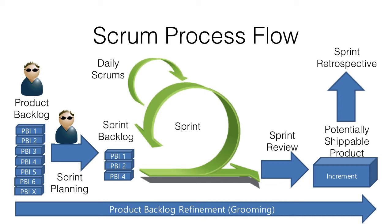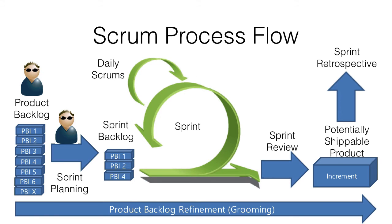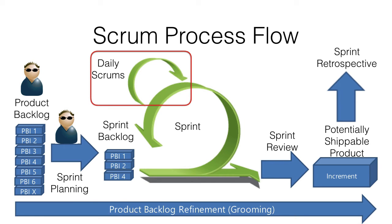The development team immediately set to work completing the items in the sprint backlog in a set timeframe called a sprint. Every day during the sprint, the development team meet in a short 15-minute stand-up meeting called the daily Scrum, to discuss their individual progress, synchronize their activities, identify any issues that will stop them from working, and plan for the work to be completed in the next 24 hours.